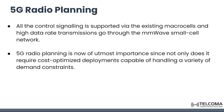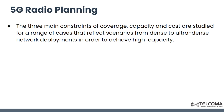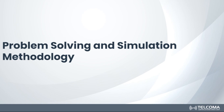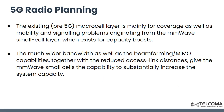5G radio planning is now of utmost importance since it requires cost-optimized deployment capable of handling a variety of demand constraints. The three main constraints are coverage, capacity, and cost. There is a requirement to study these constraints for a range of cases reflecting scenarios from dense to ultra-dense network deployments in order to achieve high capacity. Whenever we plan a new network, we have to consider these parameters.